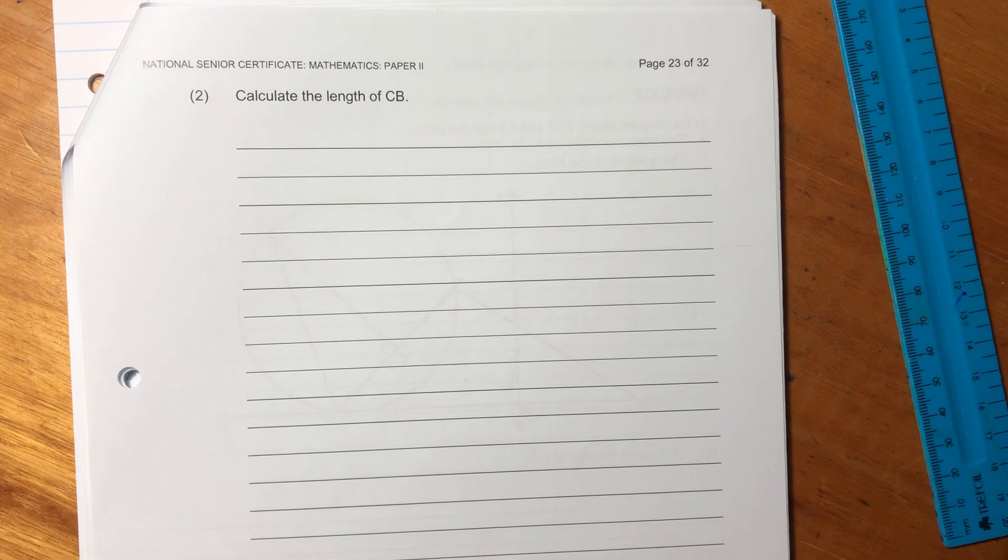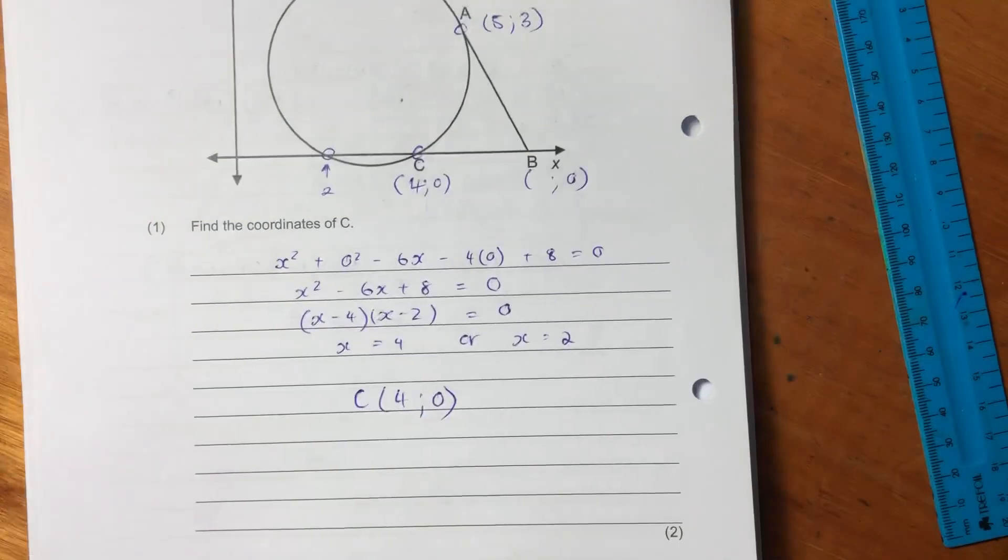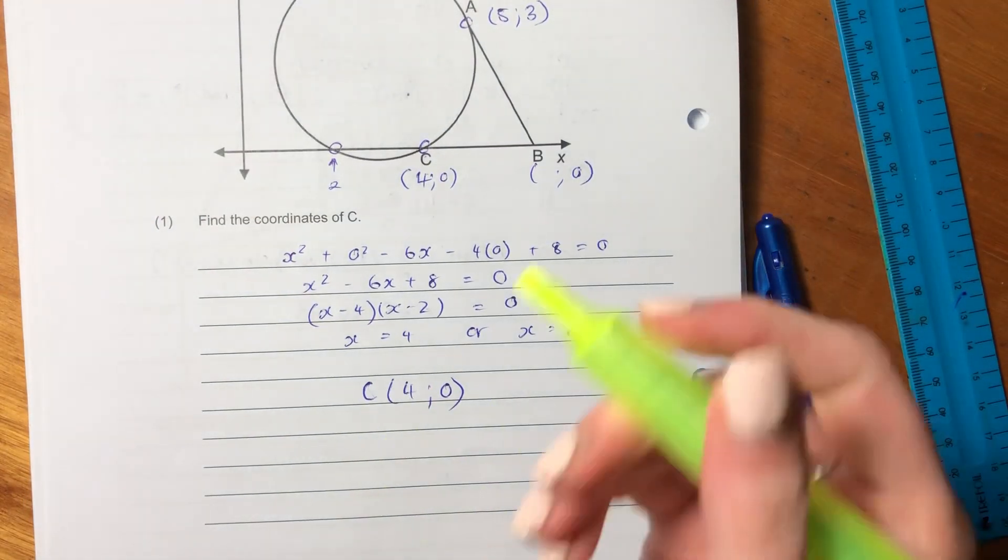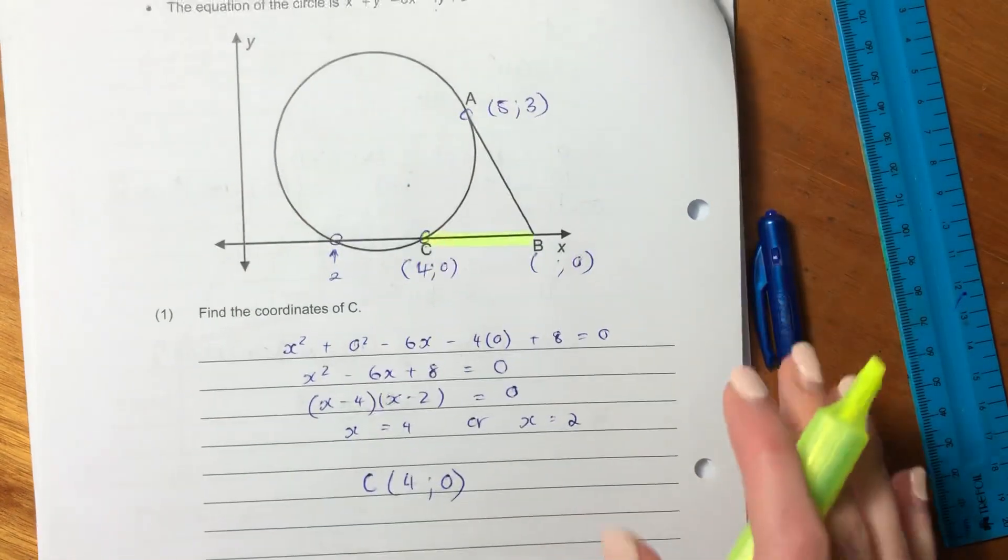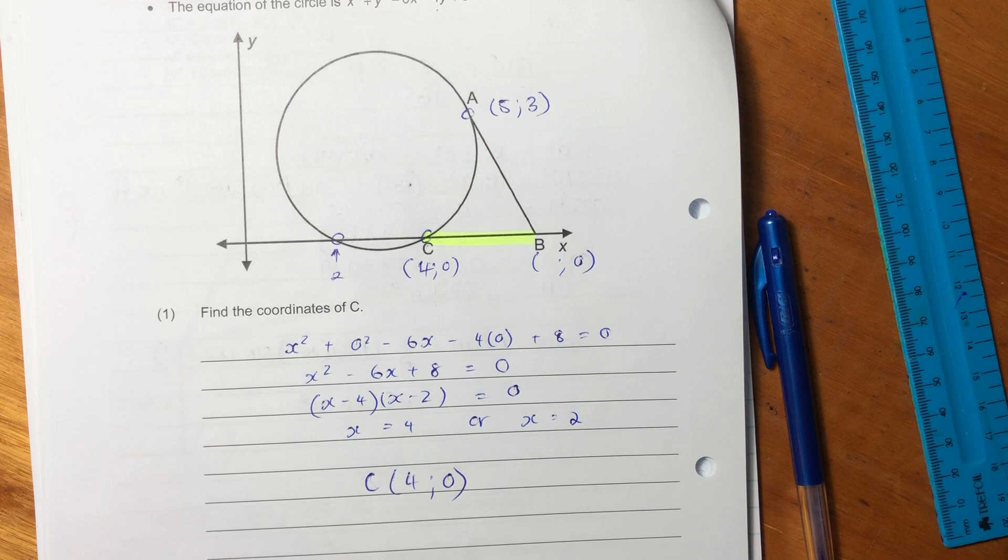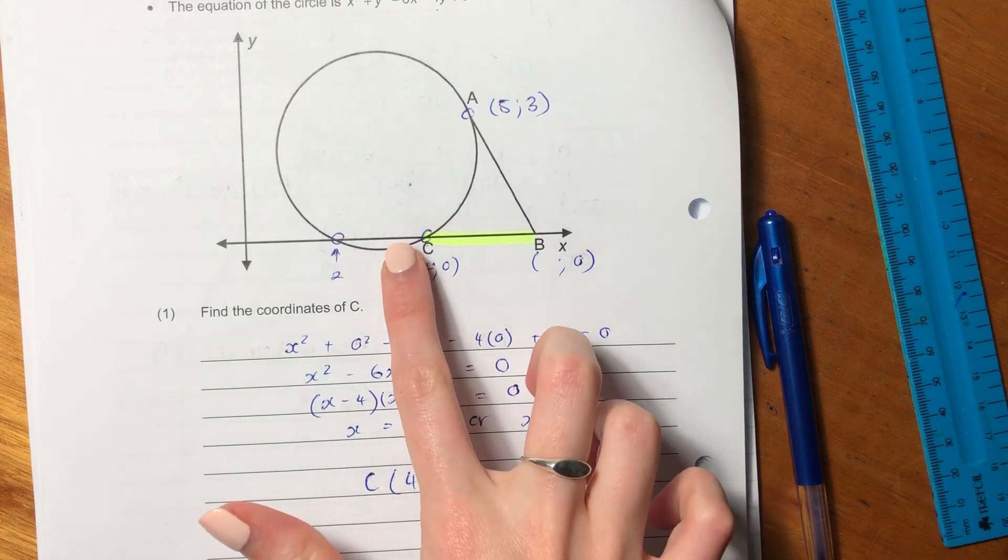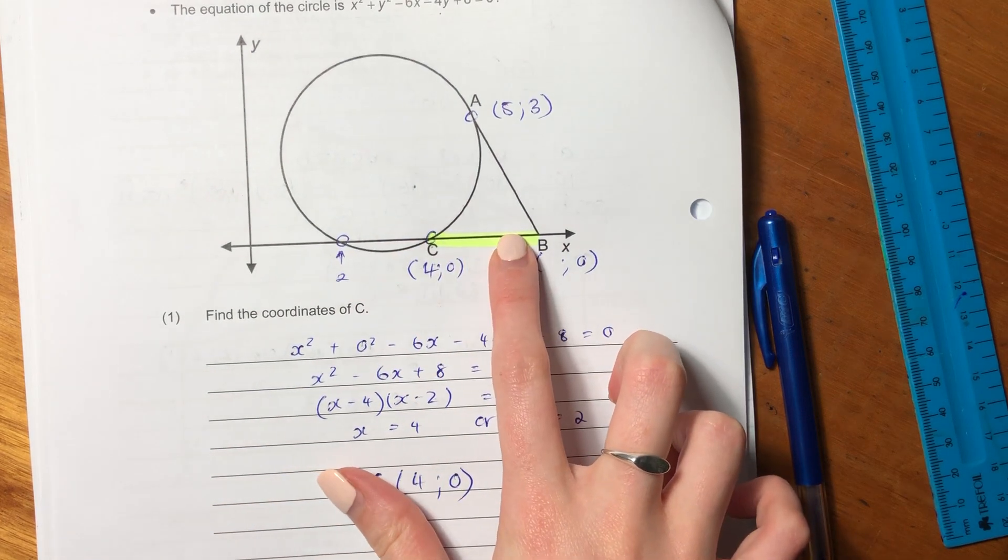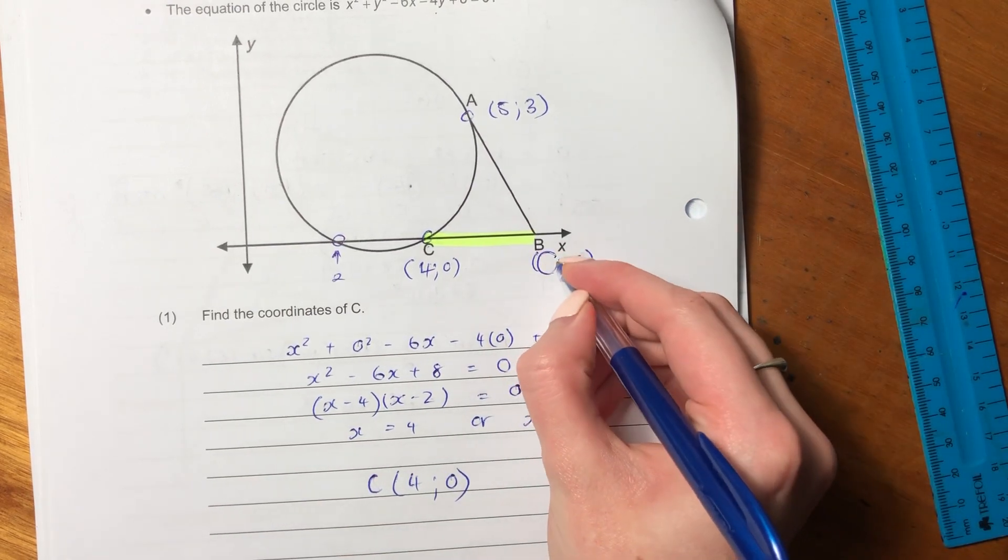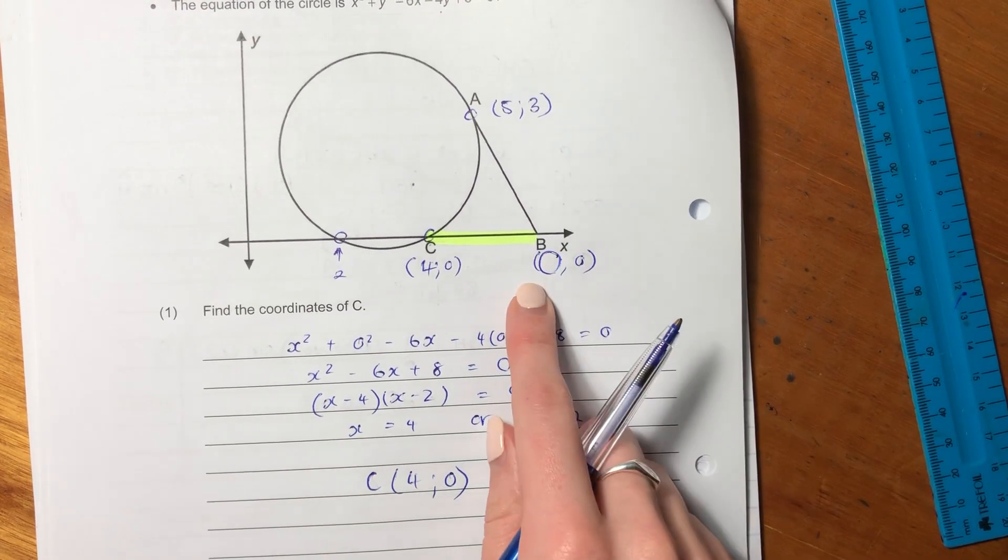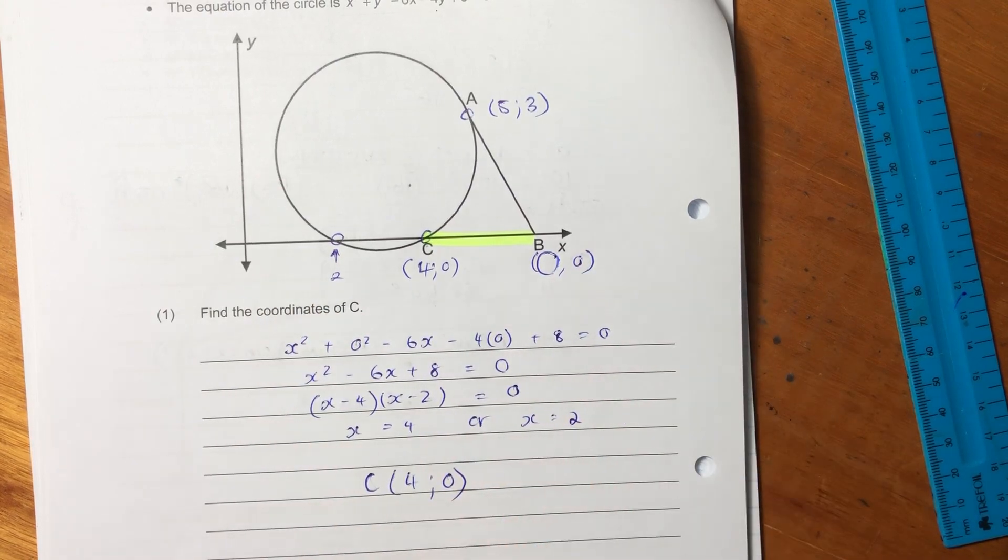Next question is quite a big question, but let's not panic. Let's just see what we need to do. So it says calculate the length of CB. So the most important thing is we need to know what we're talking about. So we know that's the length we're looking for. So we want to find that length there. So if we want to find that length there, fundamentally we want to find the x value for B.